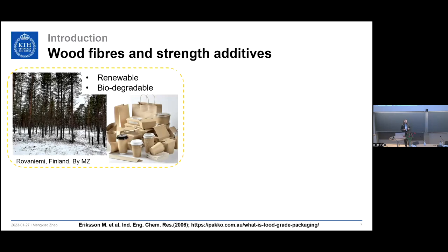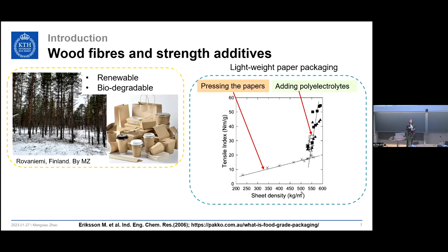Paper packaging board is made from wood fibers — renewable and biodegradable. But why do we need to use strength additives? I especially like this figure from our previous PhD student Marlene Erickson. It shows two trend lines: the top line with crosses refers to pressing papers to increase tensile index, while the other line with solid squares and triangles refers to adding polyelectrolytes to increase tensile index. It's very clear that adding polyelectrolytes can increase tensile index efficiently without compromising density.